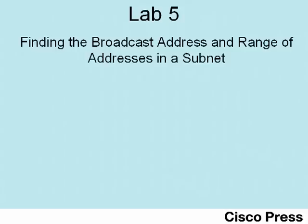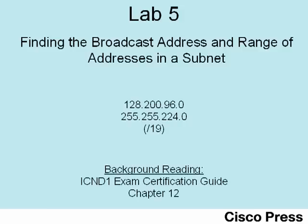Hello and welcome to ICND1 Lab 5, finding the broadcast address and range of addresses in a subnet. This video essentially continues ICND1 Lab 4, which found subnet number 128.200.96.0 with mask 255.255.224.0. This video is probably best used in conjunction with your reading of Chapter 12 in the ICND1 book.